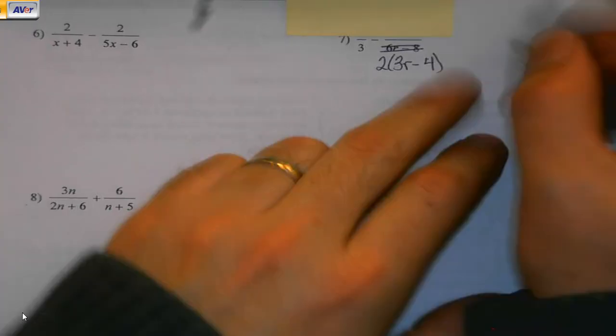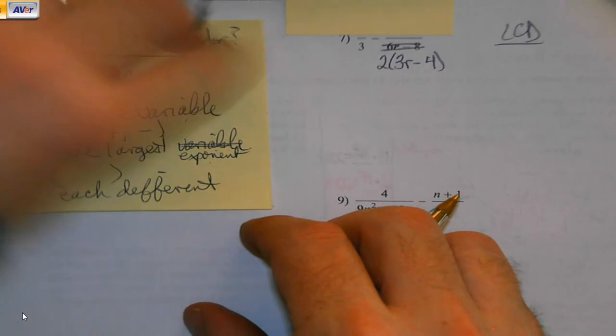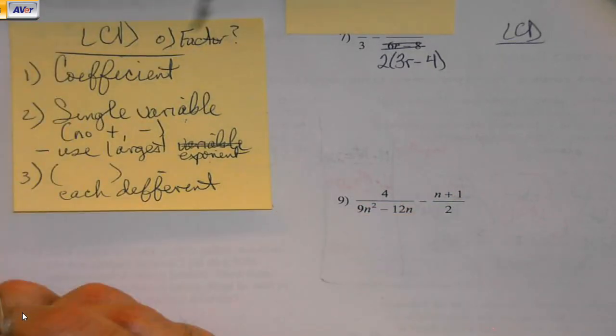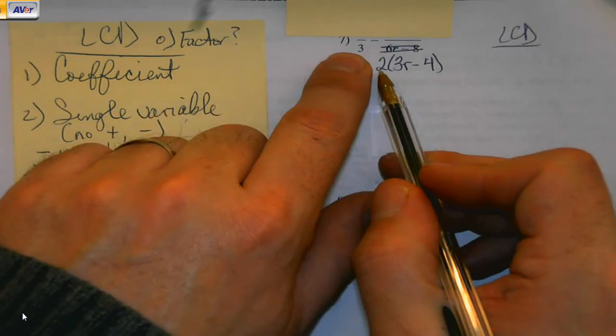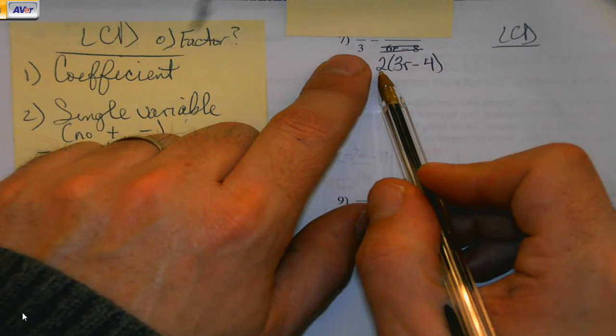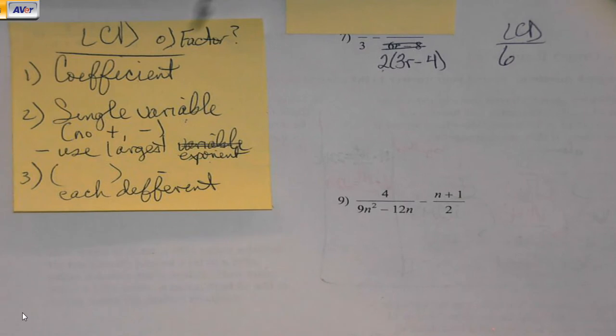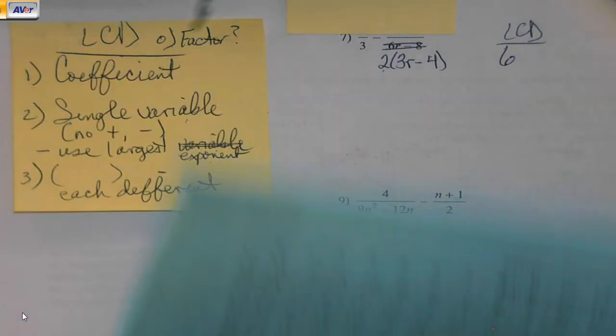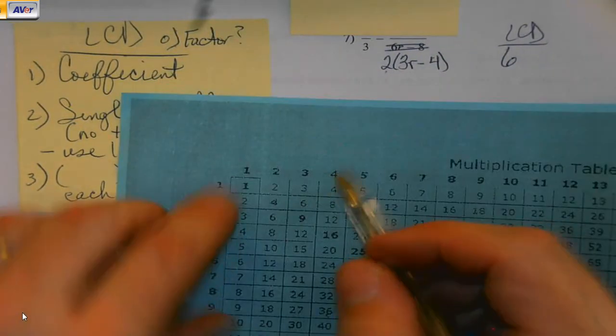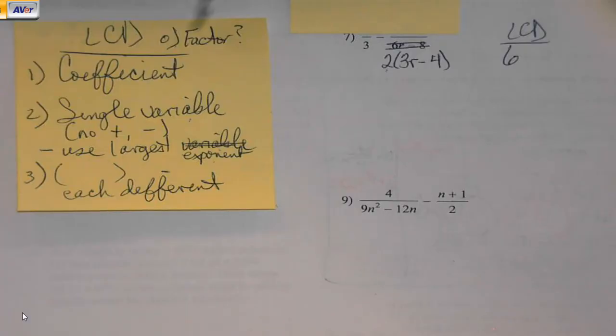So then, I go looking for my LCD. Coefficients, two and three. If I start counting by twos and threes. Two, four, six, eight, three, six. I heard six in both of those lists. Six. If I'm not sure, I go to the two and three columns, and I start working down until I see the same number. Single variables? Nope. Parentheses? Yep, 3r minus 4.